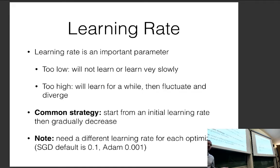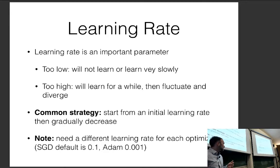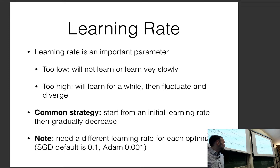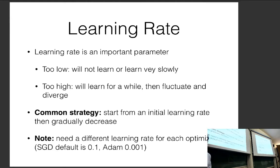Each optimizer has a different default learning rate. SGD has a default of around 0.1. Adam has a default of 0.001 — people have tried various values and these seem to work well. If you accidentally use Adam with 0.1 or SGD with 0.001, you're going to have a very painful optimization experience. If you're trying to re-implement previous work, pay attention to and copy the learning rate they used previously.